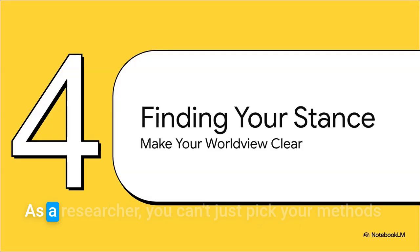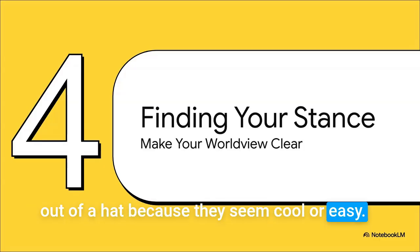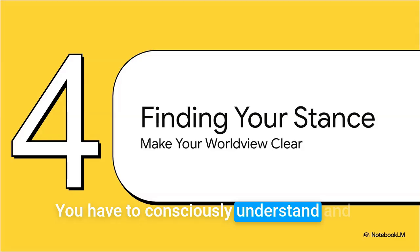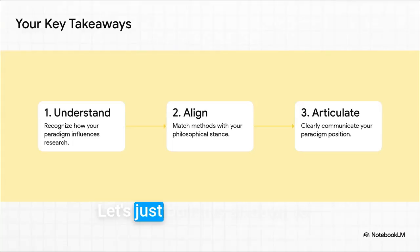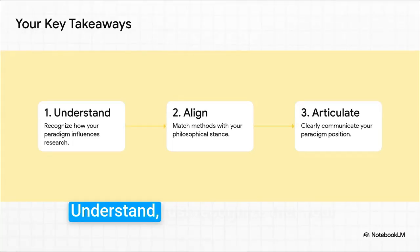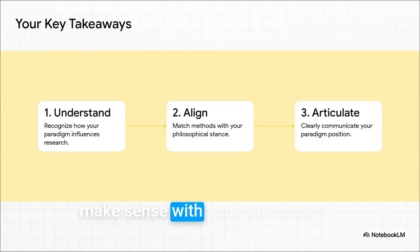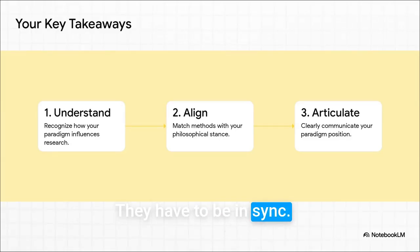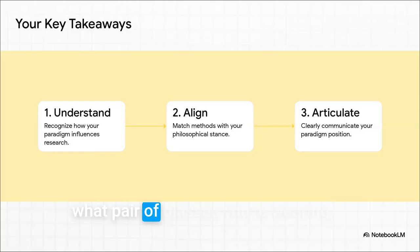So here's the bottom line. As a researcher, you can't just pick your methods out of a hat because they seem cool or easy. You have to consciously understand and choose the paradigm that's guiding you. You have to find your stance and own it. Let's boil this down to three key takeaways. Number one: understand — recognize that your worldview shapes everything you do. Two: align — make sure your methods actually make sense with your philosophy; they have to be in sync. And three: articulate it — clearly state your paradigm in your work so that everyone reading it knows exactly what pair of glasses you're wearing.